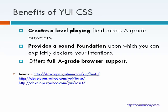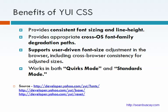What are the benefits of using the YUI CSS library? It creates a level playing field across A-grade browsers. It provides a sound foundation upon which you, the developer, can explicitly declare your intentions. It offers full A-grade browser support. It provides consistent font sizing and line height, and appropriate cross-OS font family degradation paths. It supports user-driven font size adjustments in the browser, including cross-browser consistency for adjusted font sizes. And it works in both quirks mode and standards mode.